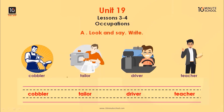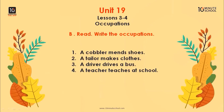এবারে আমরা লিখে ফেলবো যেগুলো আমরা এতক্ষণ যা শিখেছি। তার মানে আমাদের অ্যাক্টিভিটি এর পরে আমরা পড়বো Unit 19, Lessons 3 and 4। এখানে আমরা পড়বো অকুপেশনস বা পেশা — অ্যাক্টিভিটিতে যা আছে।